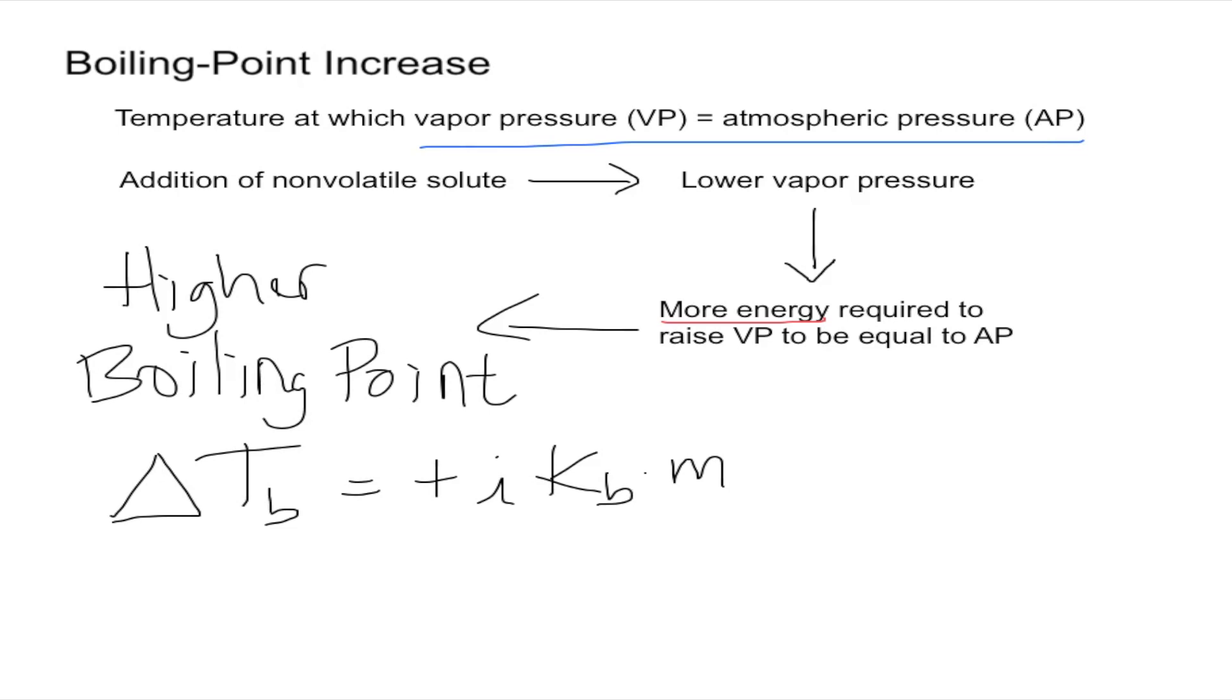And now, to understand this equation, this right here is going to be a boiling point increase. The positive, you can discard, it's not going to make a difference. And the i is the van't Hoff factor.